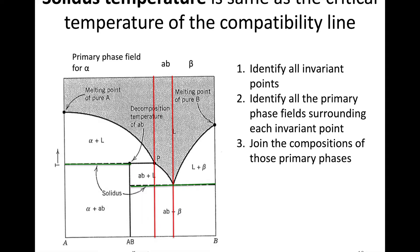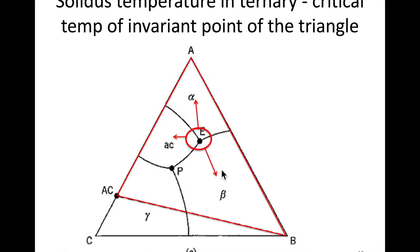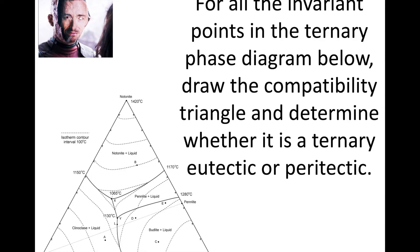This tells us the solidus temperatures of those reactions. In a ternary diagram, it tells us the critical temperature of that invariant point — basically where that reaction occurs on the diagram.